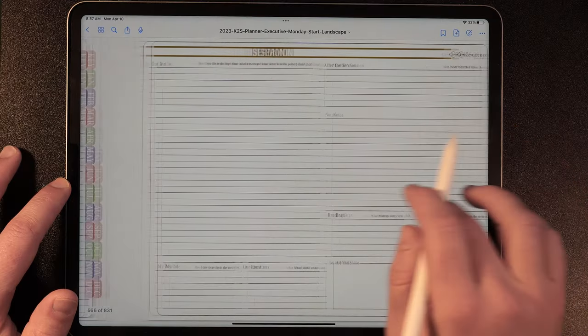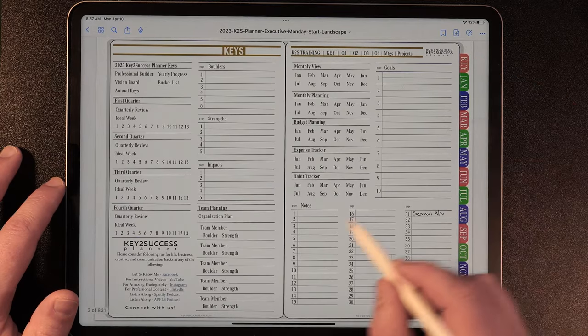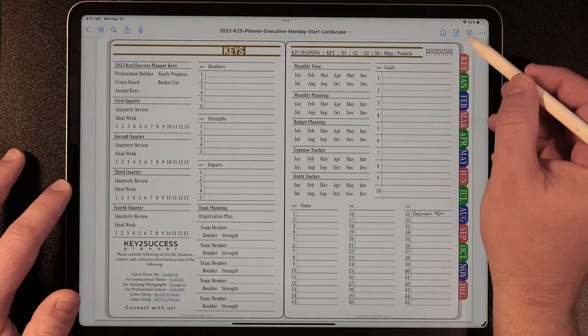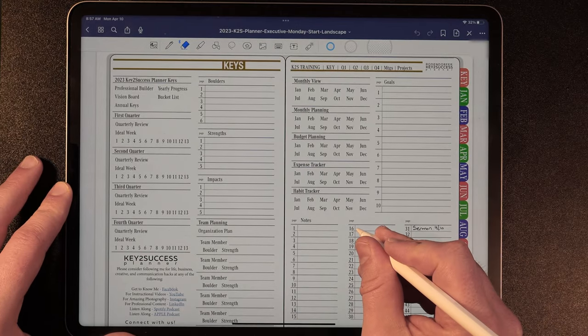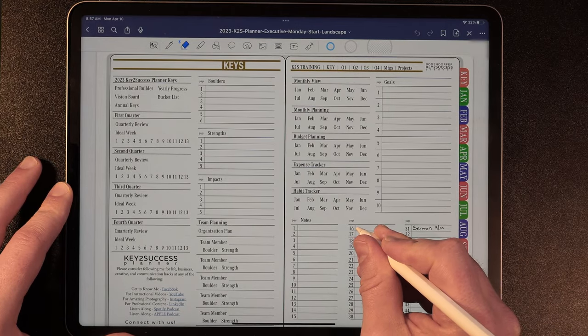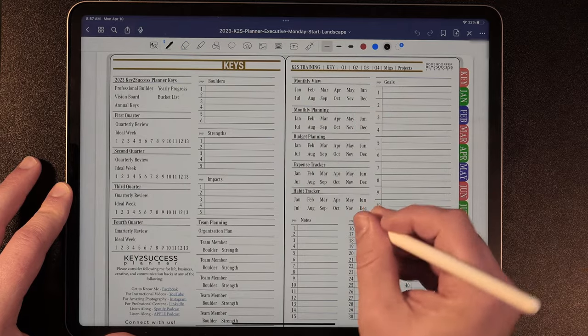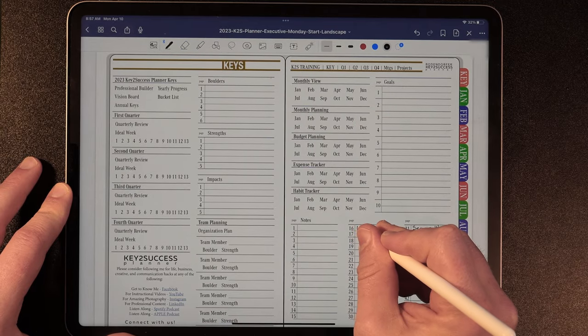So now let's go ahead and take a look at GoodNotes. We're going to go ahead and open up GoodNotes and we are going to go back to our key page here. And what I'm going to do here is I'm going to go ahead and write a note in here. I'm going to choose this page over here, 16, and write balance wheel or living keys.